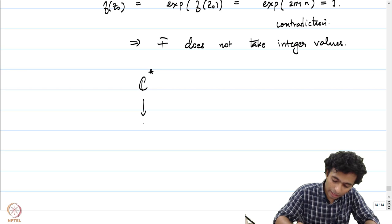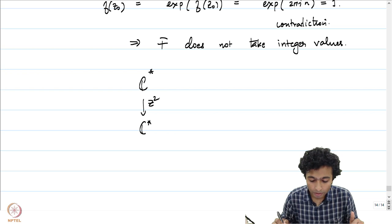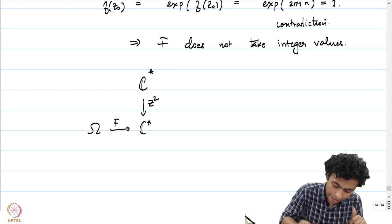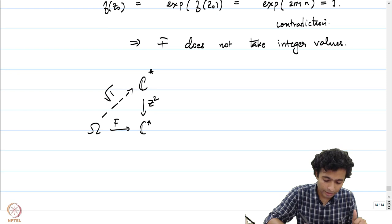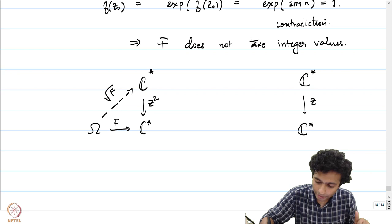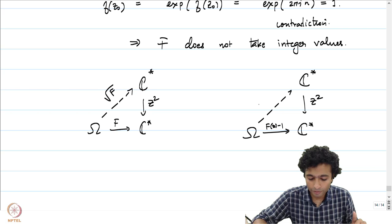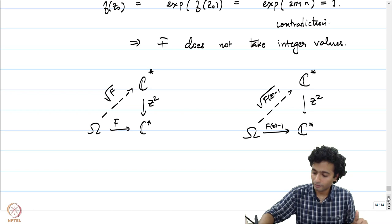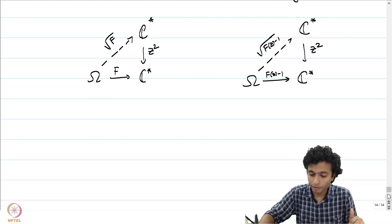We now have two maps: the covering map z ↦ z² from C* to C*, and the map capital F from omega to C*. Since F does not take integer values, in particular F does not take the value 0, so we have a lift — call it square root of F — which is a branch of the square root function. We also have the map f(z) − 1 from omega to C*, since F does not take integer values and in particular not 1, so we again have a lift: square root of F(z) − 1. We now have two holomorphic functions: square root of F and square root of F minus 1.